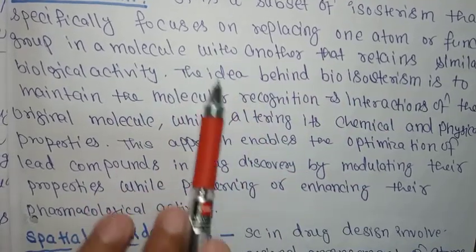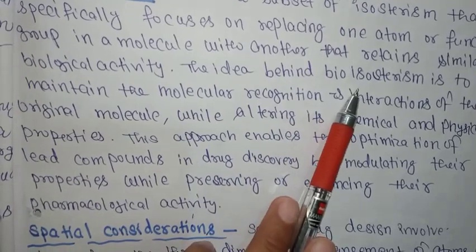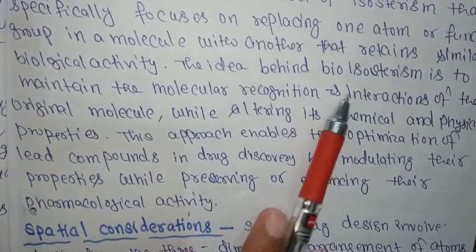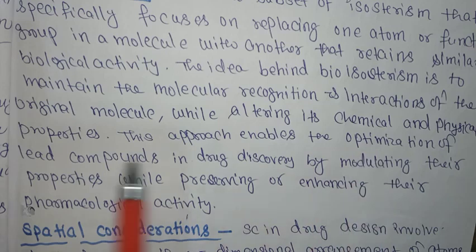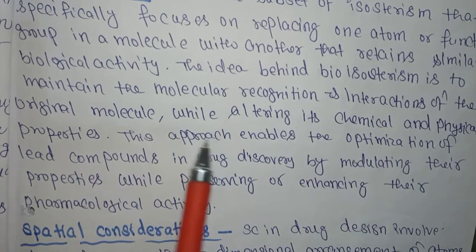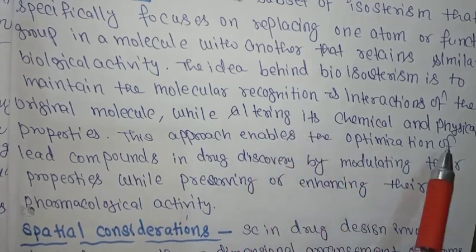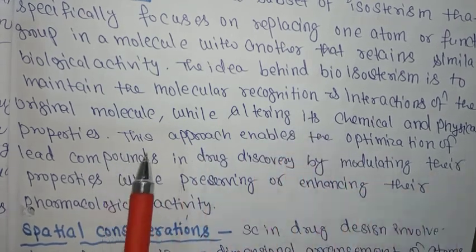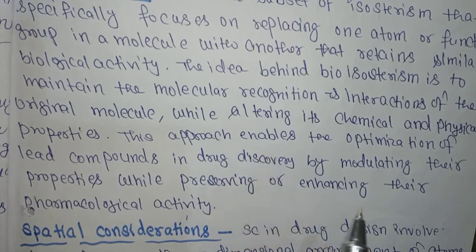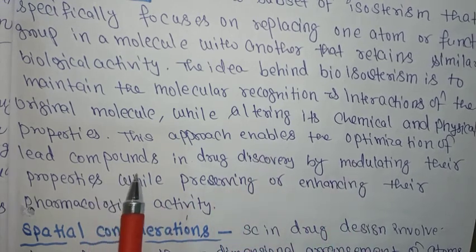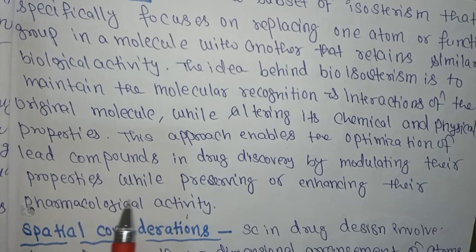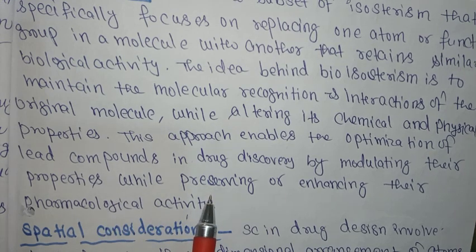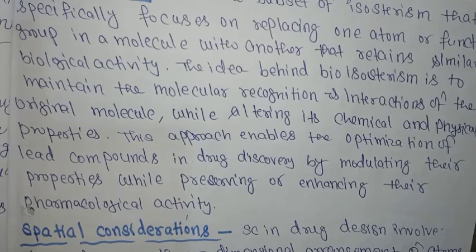Bio-isosterism is a subset of isosterism that specifically focuses on replacing one atom or functional group in a molecule with another. The idea behind bio-isosterism is to maintain the molecular recognition and interaction of an original molecule while altering its chemical and physical properties. This approach enables the optimization of lead compounds in drug discovery by modulating their properties while preserving or enhancing their pharmacological activity.